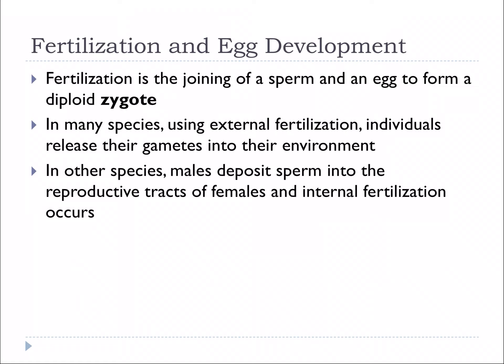In species that use external fertilization, meaning the egg and sperm come together outside of the body, the gametes — the egg and sperm — are released into the environment. In other species, the male deposits the sperm into the reproductive tracts of females, and internal fertilization occurs. There are trade-offs to each of these, but internal fertilization is generally preferred because it's much more efficient.